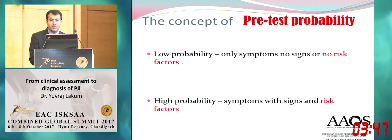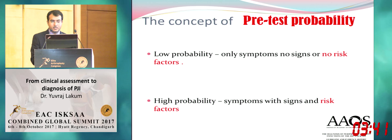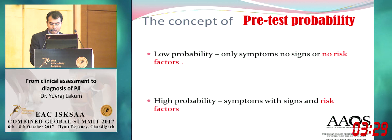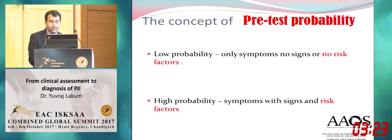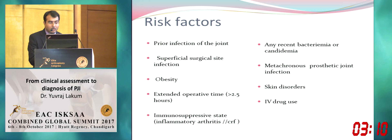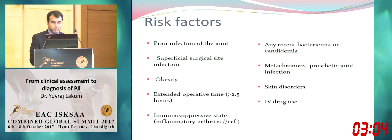The idea of this lecture is, since we all know what tests are involved in Prosthetic Joint Infection, to stick to the algorithm — the cutoff values and some myth busters. This is the concept of pre-test probability, endorsed by MSIS. When a patient comes with symptoms of infection, divide them in your mind into a low-probable or high-probable group. Risk factors include obesity, rheumatoid arthritis, diabetes, prior infection, superficial surgical site infection, operating time more than 2.5 hours, immunosuppressive states, and bacteremia.